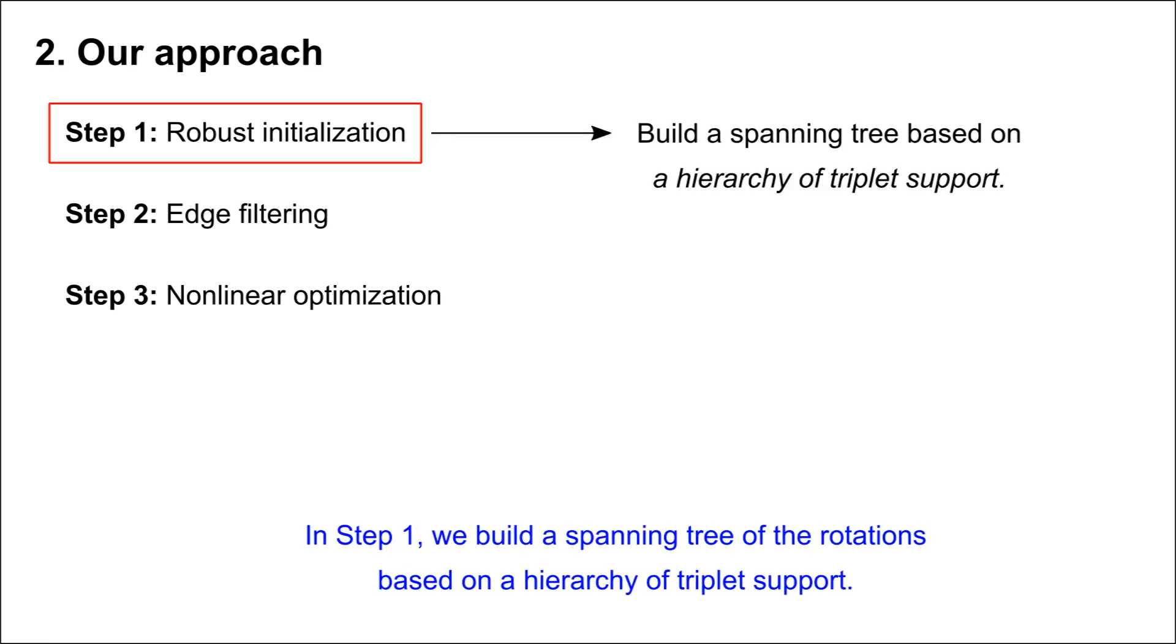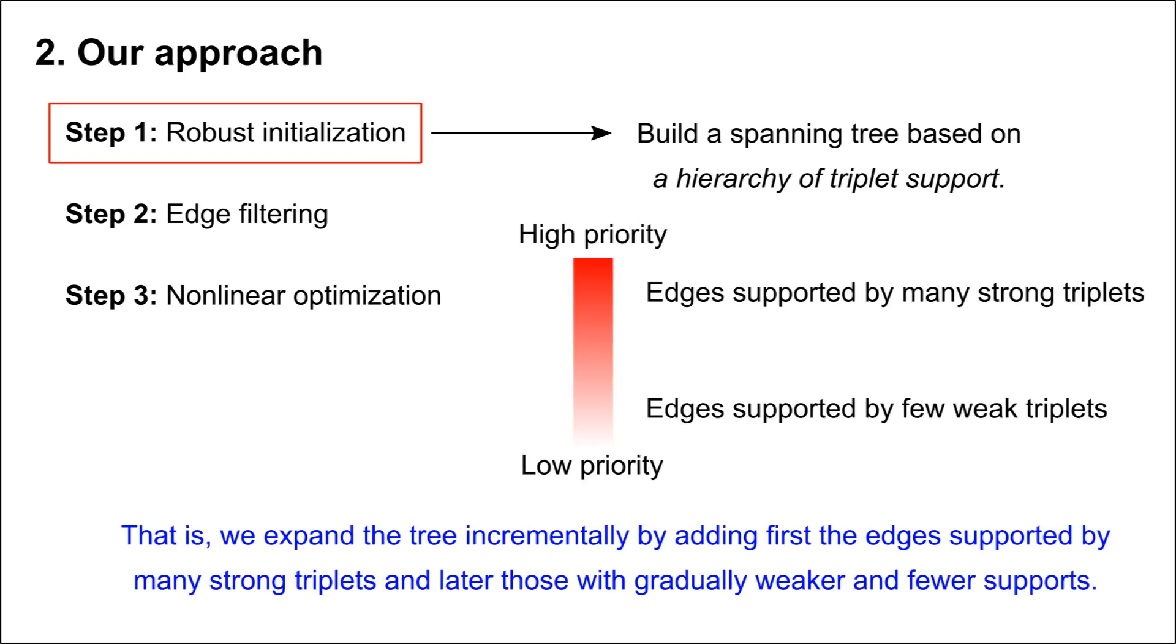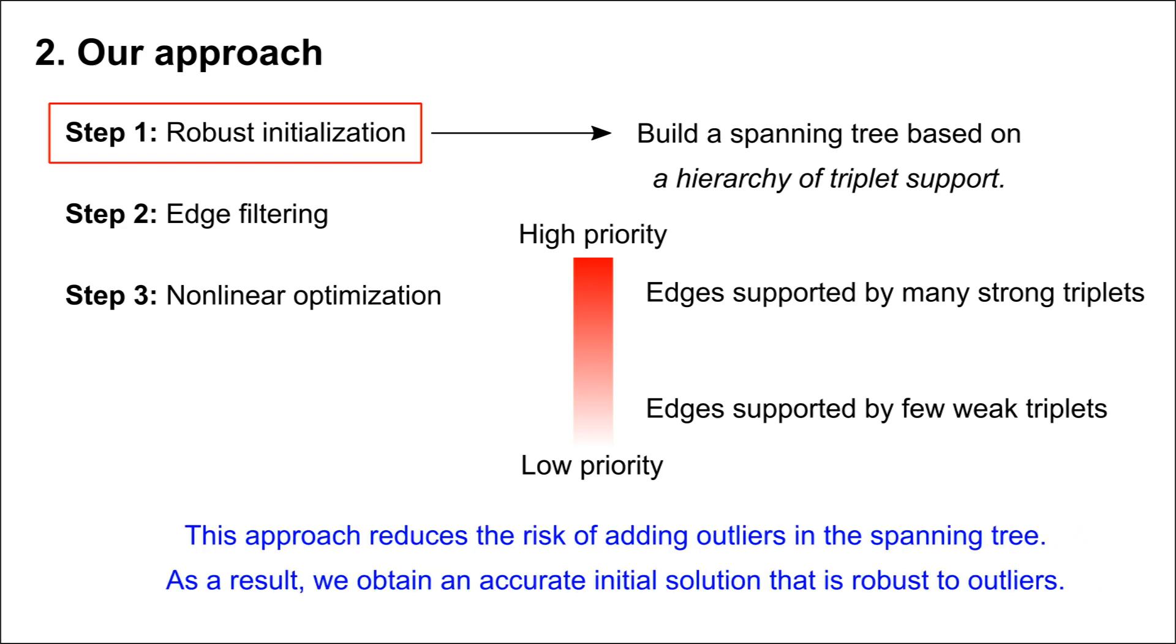In step one, we build a spanning tree of the rotations based on a hierarchy of triplet support. That is, we expand the tree incrementally by adding first the edges supported by many strong triplets, and later those with gradually weaker and fewer supports. This approach reduces the risk of adding outliers in the spanning tree. As a result, we obtain an accurate initial solution that is robust to outliers.